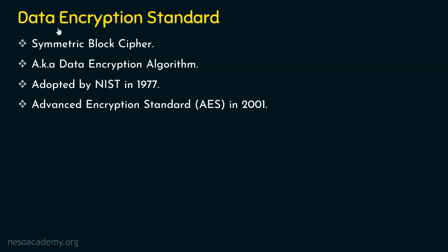DES is a block cipher, so it's clear that it's not going to take one bit or one byte as input; rather, it is going to take a group of bits. Now, how many bits is it going to take? What is the size of the plaintext, the ciphertext, the key, and the round key? All these things we are going to demystify now.